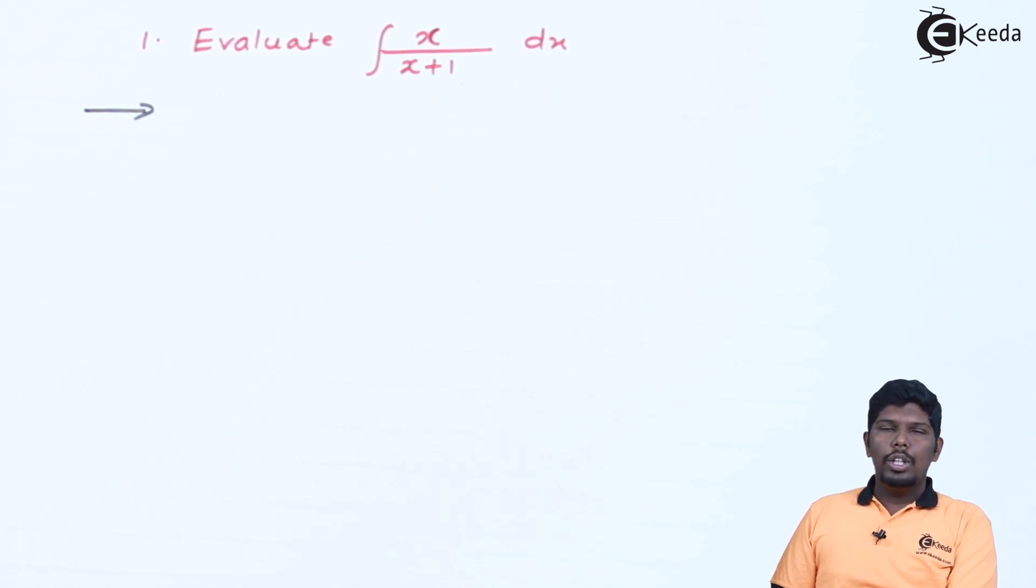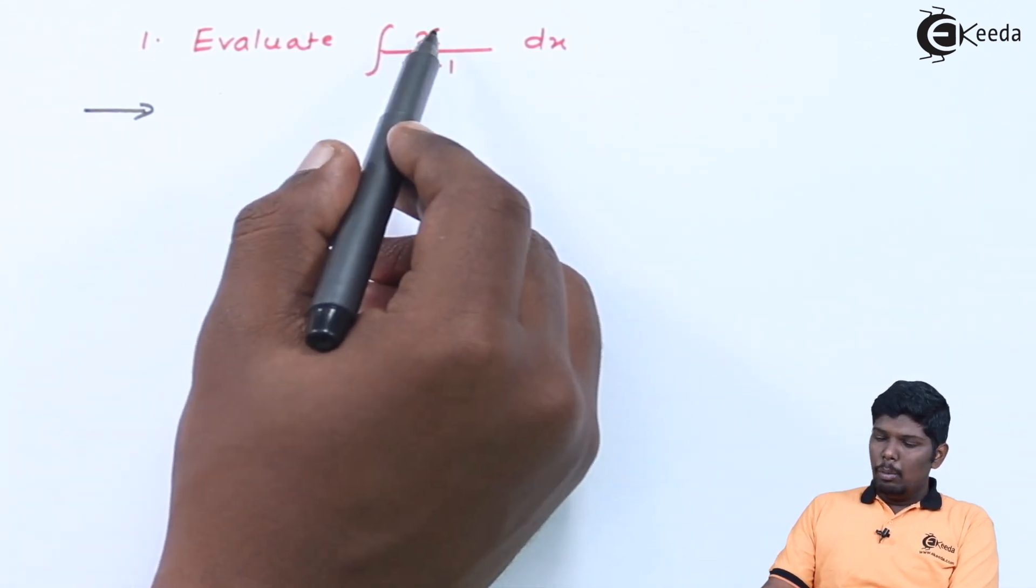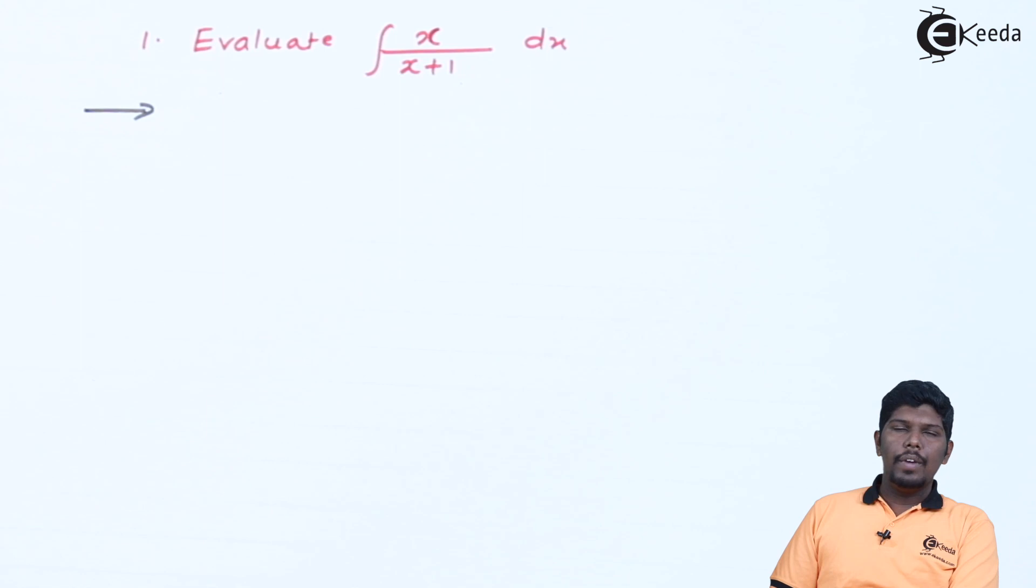But the condition is both the numerator and denominator should be in terms of x or should be the function and not a constant function. Here you can see both numerator and denominator consist of x therefore we can say it as a rational function.